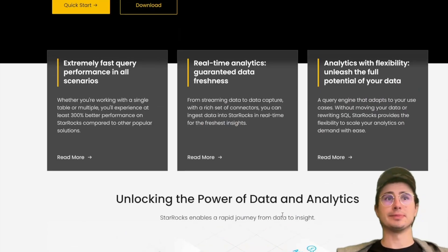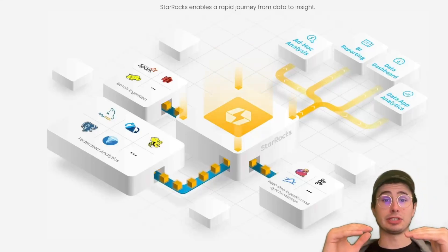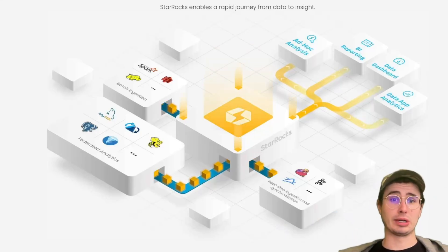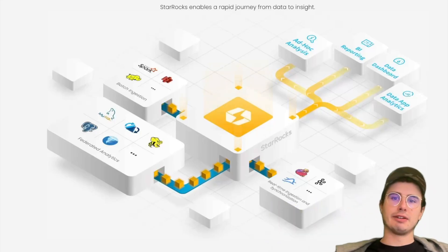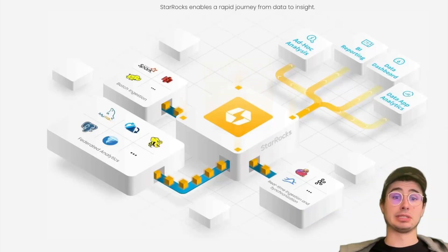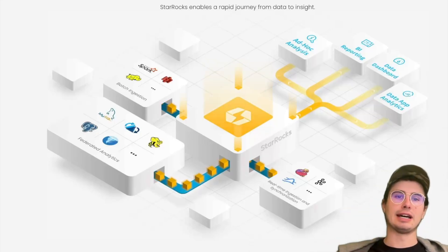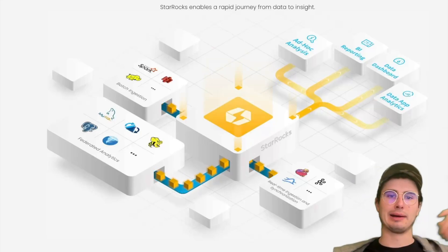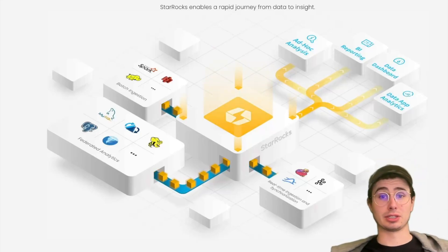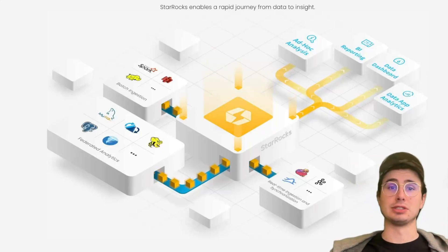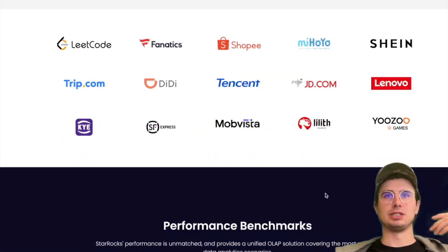StarRocks is optimized for extremely fast and cost-efficient query performance in almost any situation, because it's a massively parallel processing database built to power sub-second queries at scale. It has a fully vectorized engine, a newly designed cost-based optimizer, and intelligent materialized views. These features allow query speeds far exceeding traditional databases, especially for multi-table joins. It also has an integrated data analytics platform.